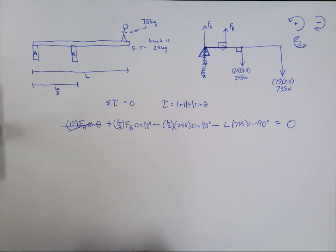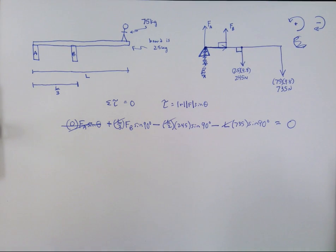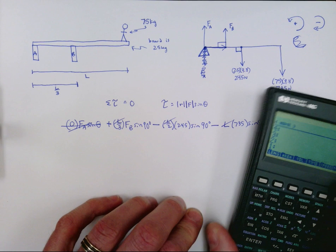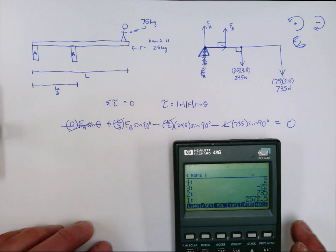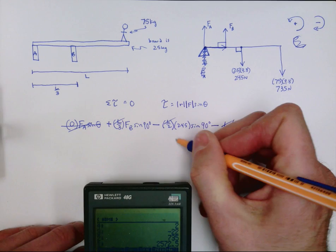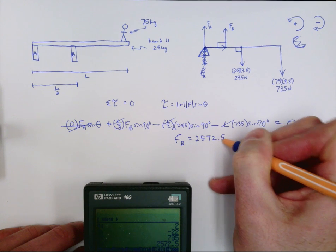They had better equal zero, otherwise this object will be rotating. And so now, by the way, notice that the Ls cancel out. So now it's just a matter of doing the algebra and getting the answer to this question. So it looks like we have 245 divided by 2 and we have 735. Add those together, and then I need to multiply by 3 to get the final answer. So force B is equal to 2,572.5 Newtons.